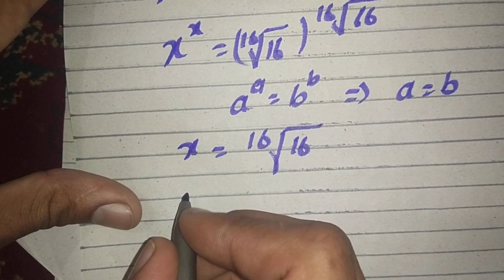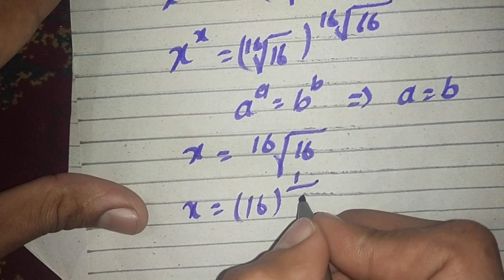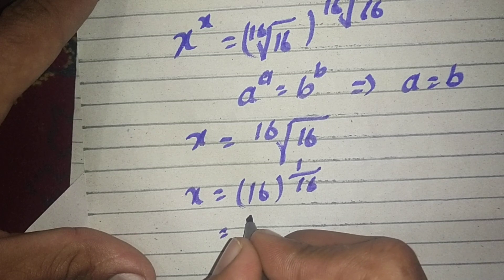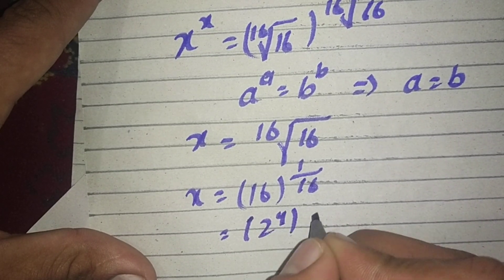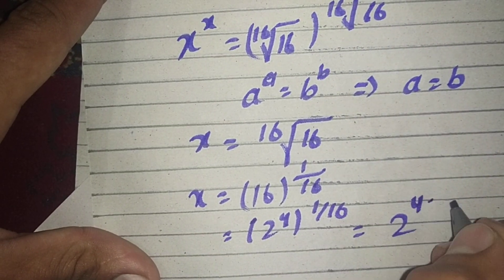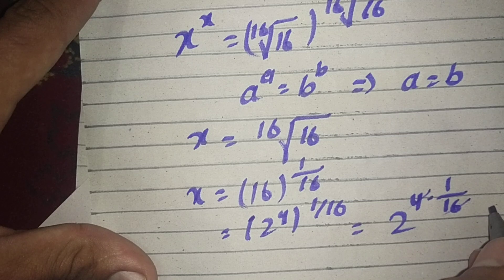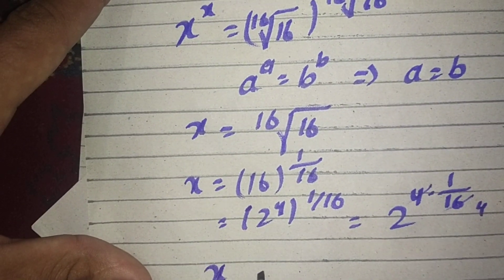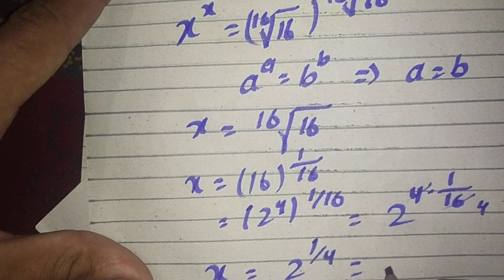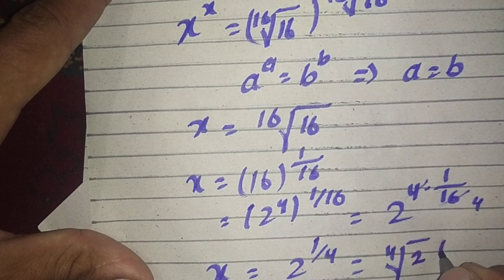This can be written as x equals 16 power 1 divided by 16. We can write 16 as 2 power 4, so it becomes 2 power 4 times 1 divided by 16. The 4 cancels with 16, giving x equals 2 power 1 divided by 4, which is equal to the fourth root of 2. This is the final answer.